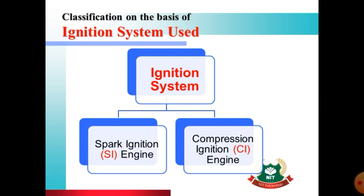In a CI engine, the pressure and temperature increase during compression. When the temperature reaches the fuel's self-ignition temperature, combustion occurs automatically. So on the basis of ignition system, SI engines correspond to petrol engines and CI engines correspond to diesel engines.